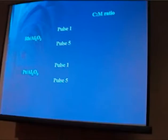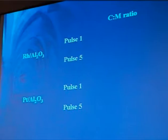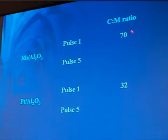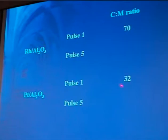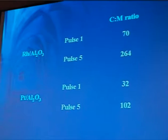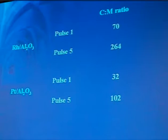How much carbon is actually laying down? We can do an accurate measure for each pulse and look at the carbon-to-metal ratio — carbon relative to the number of actual surface sites as measured by CO or hydrogen absorption. At pulse 1 for rhodium, we already have a ratio of 70 carbon atoms to every metal atom on the surface; for platinum it's just half that at 32. By pulse 5 we have considerably larger numbers, and we can assume that not all of this is sitting on the metal.